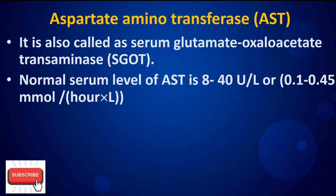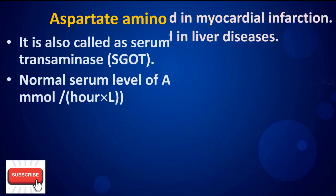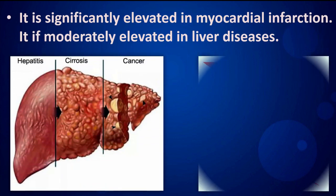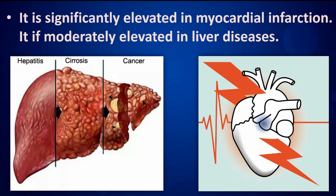Aspartate aminotransferase (AST) is also called serum glutamate oxaloacetate transaminase (SGOT). The normal serum level of AST is 8 to 40 international units. It is significantly elevated in myocardial infarction and moderately elevated in liver diseases.